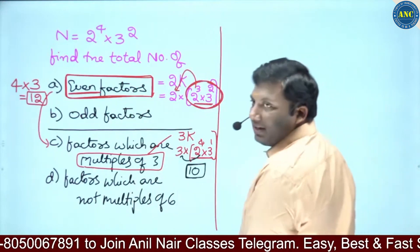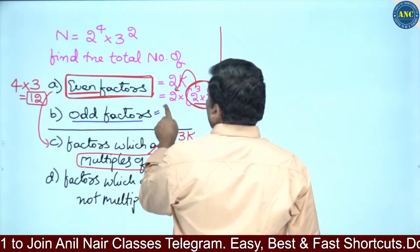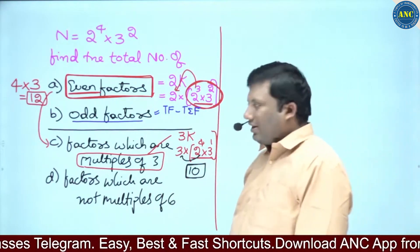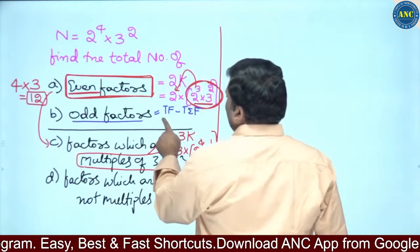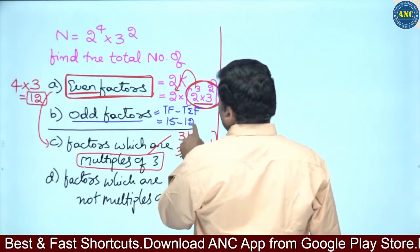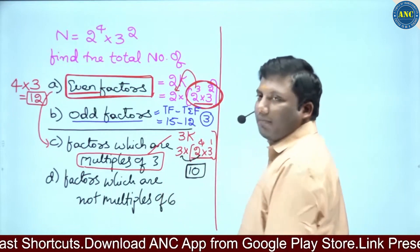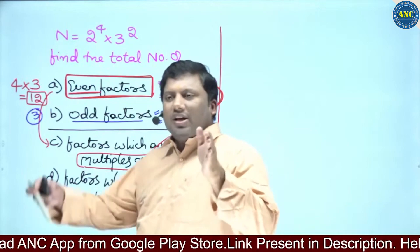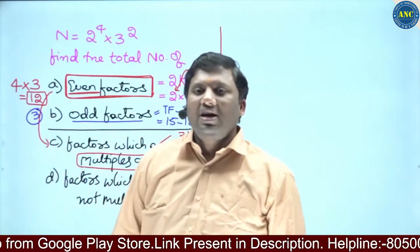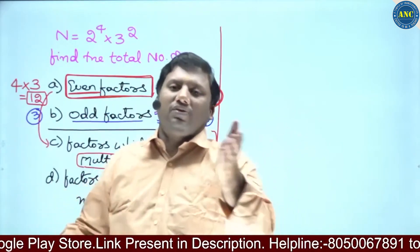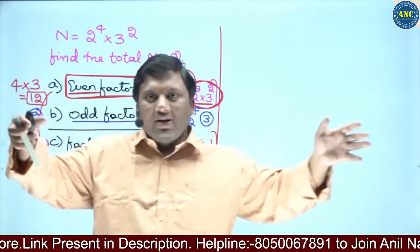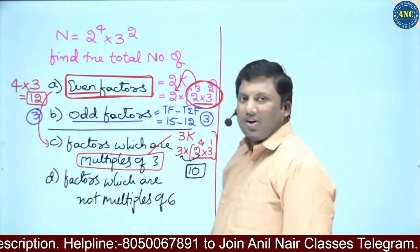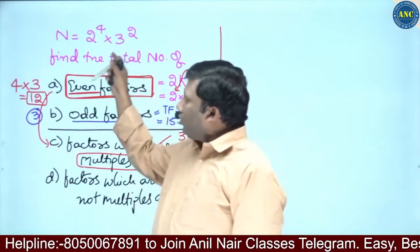Now for odd factors. There are two ways. Method one: odd factors = total factors minus total number of even factors. Total factors (TF) are 15; total even factors (TEF) are 12. So 15 minus 12 equals 3. This works because total number of factors is always equivalent to even factors plus odd factors — since every natural number is either even or odd.